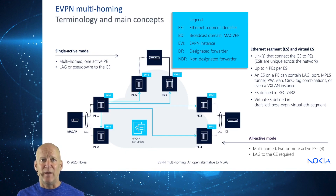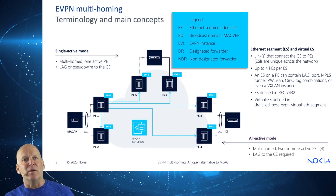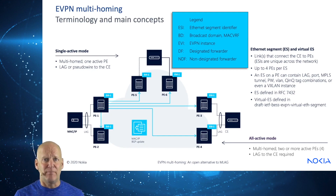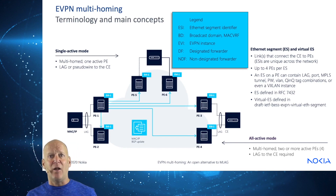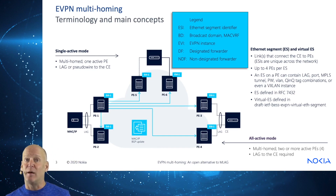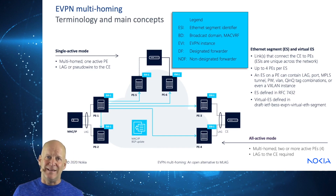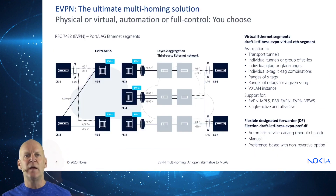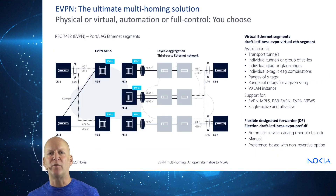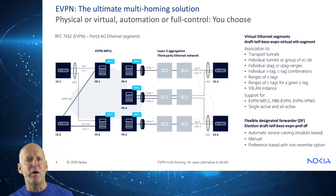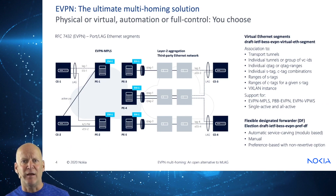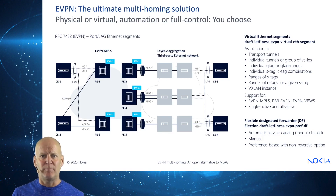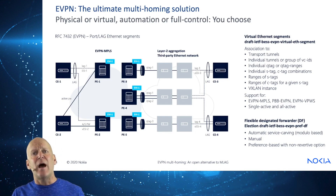Single active mode is multi-homed but you have one active PE at a time. A LAG or pseudowire to the CE is required. In all active multi-homed, you can have two or more PEs — up to four — and a LAG to the CE is required. In EVPN, we really do have the ultimate multi-homing solution, whether it be physical links or virtual, automated or full manual control. The drafts mentioned deal with two very important aspects: connectivity between the PE and CE, and how we deal with BUM traffic — loop avoidance in these networks.